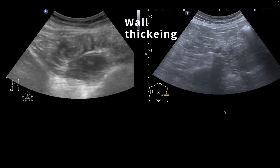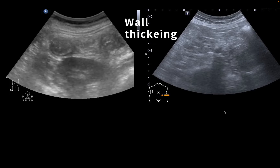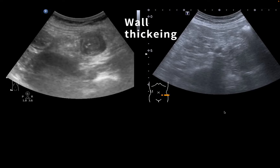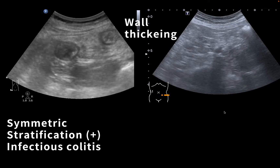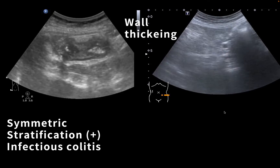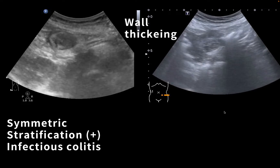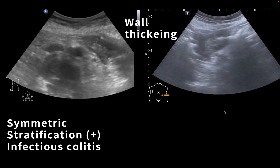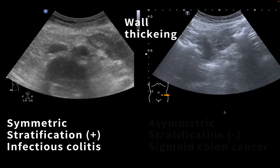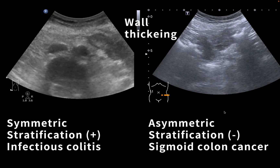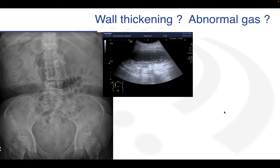Let's look at these two wall thickening comparisons. Wall thickening with preserved stratification and symmetric appearance is coming from infectious colitis. In this other patient, the sigmoid colon wall is thickened but it's asymmetric, and the stratification is not so clear. So when you encounter patients having asymmetric wall thickening without stratification, you should consider malignant growth. In this case, sigmoid colon cancer.